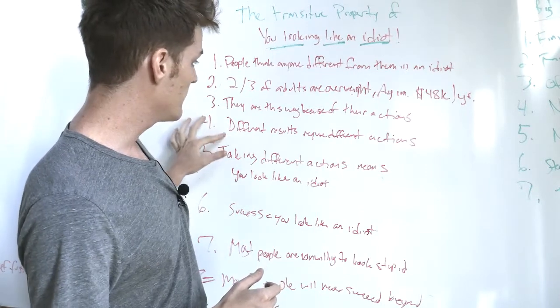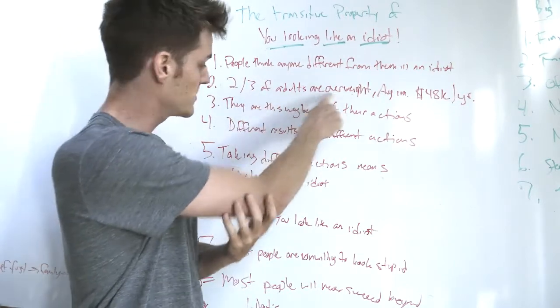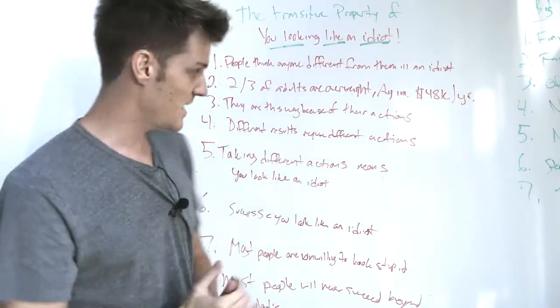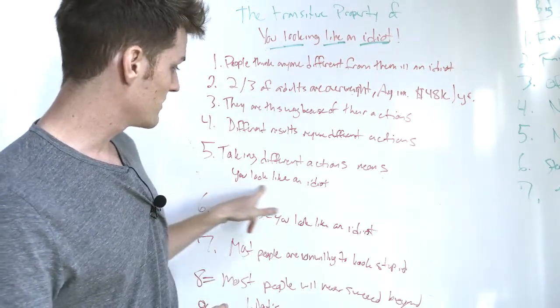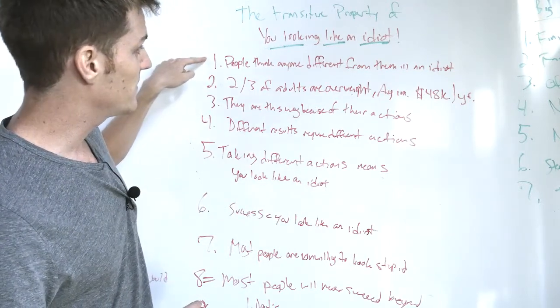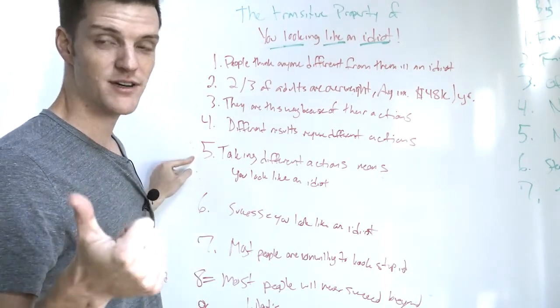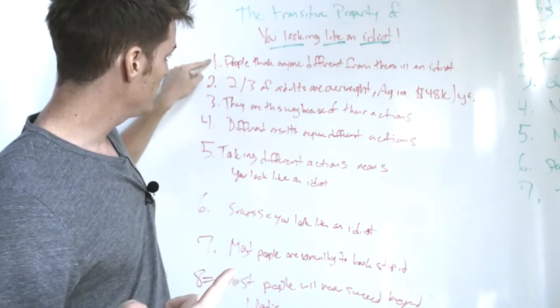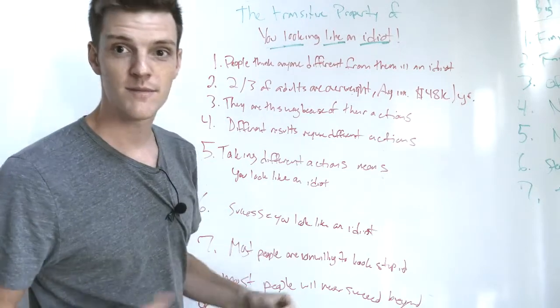Number four, different results require different actions. If you want to get different results than the average results, you have to take different actions than the average actions. Number five on this list, taking different actions means you look like an idiot. I want to circle back up to number one. People think anyone different from them is an idiot. In order to get different results, if we want to be above average in income, in lifestyle, whatever else, we're going to have to take different actions. People think that taking different actions makes us crazy.